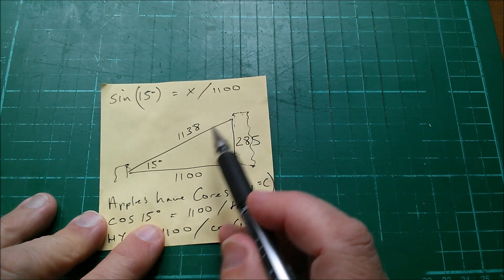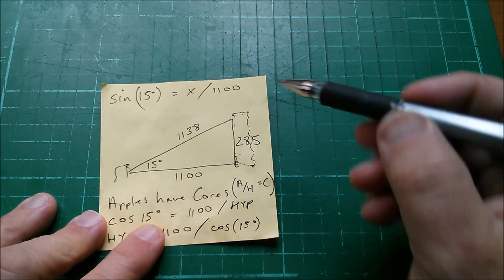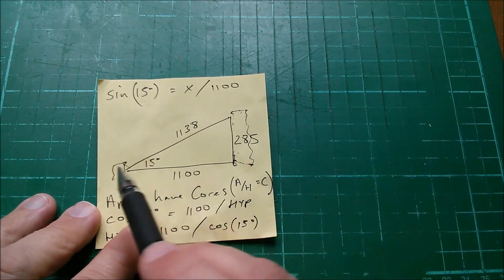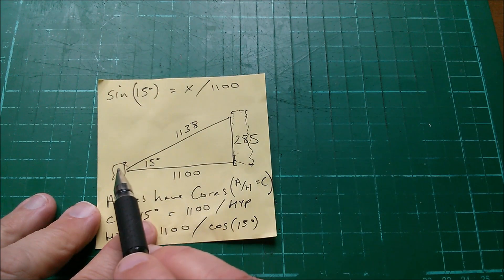We need the rafter length to be 1138 and the apex post needs to be 285 millimeters taller than the end post.